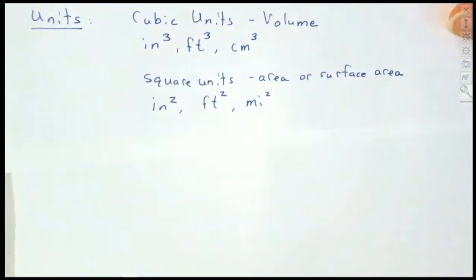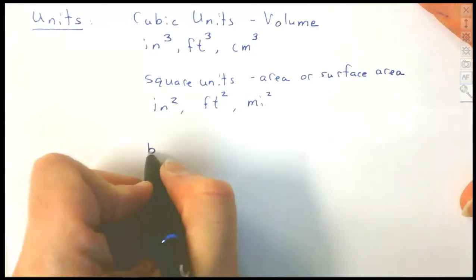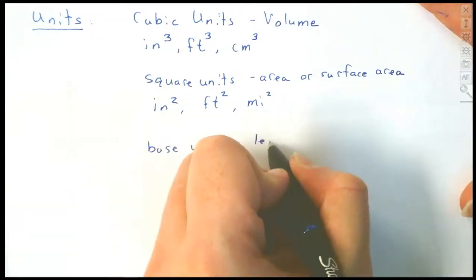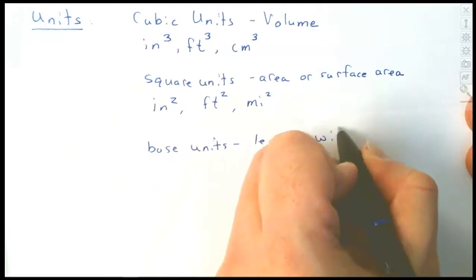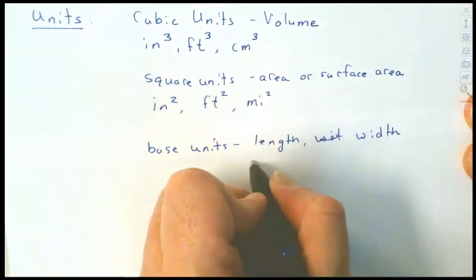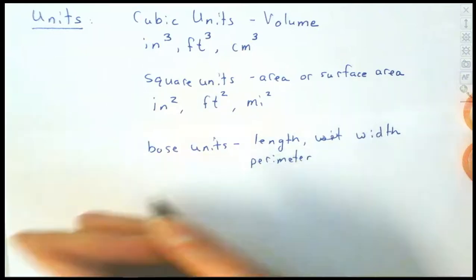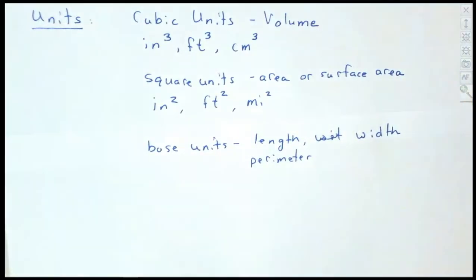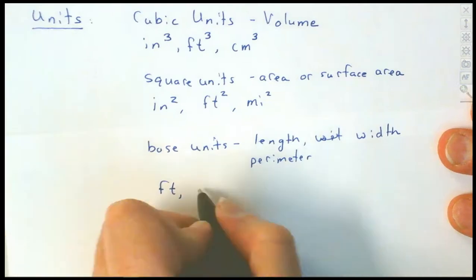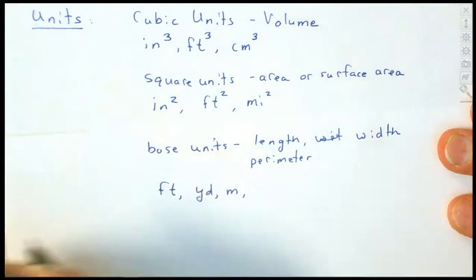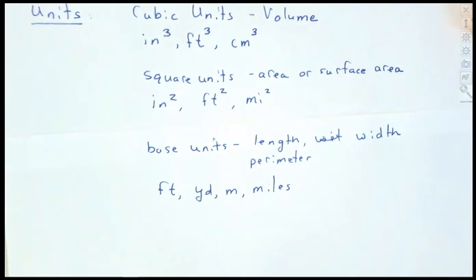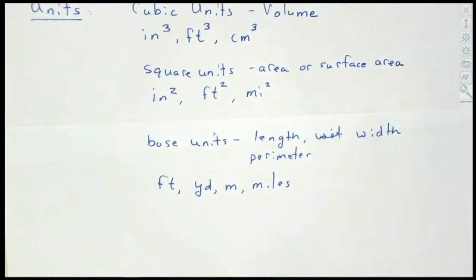What about the base units? Base units are working with lengths, width, perimeter, circumference — anything you can measure. That's going to be your base unit. When we talk about base units, that's going to be things like feet, yards, meters, miles. If you're doing a length or a width, it's not going to be square — it's just going to be that base unit.